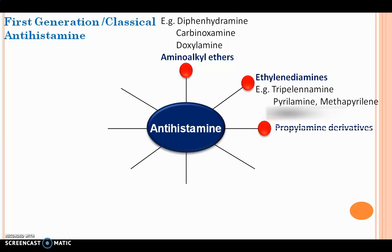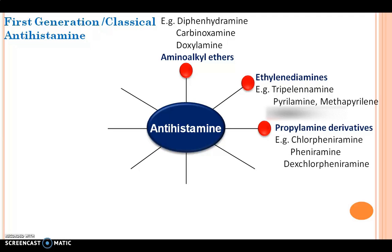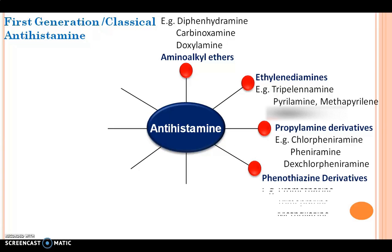Moving to the next class: propylamine derivatives. Examples are chlorpheniramine, pheniramine, and dexchlorpheniramine. The next class is phenothiazine derivatives. Examples are promethazine, trimeprazine, and methdilazine.